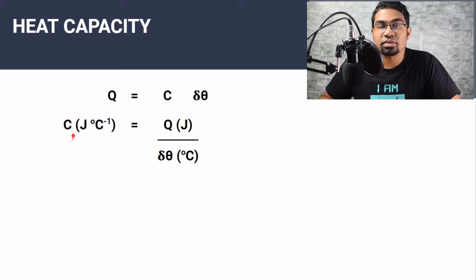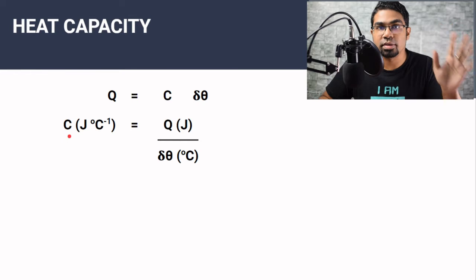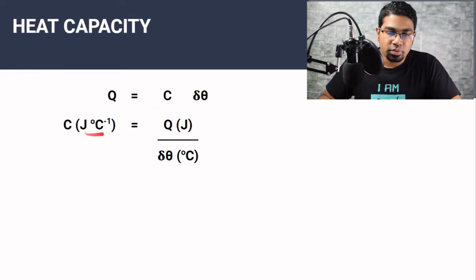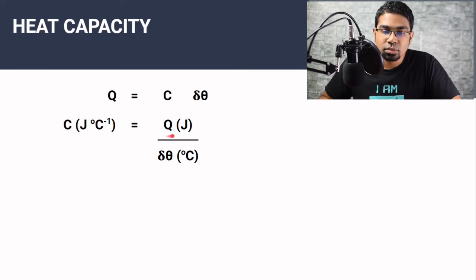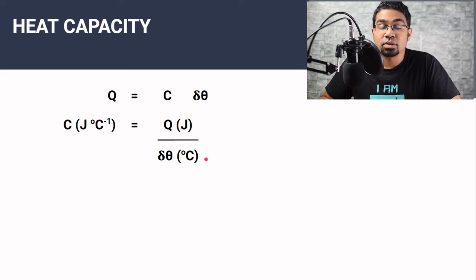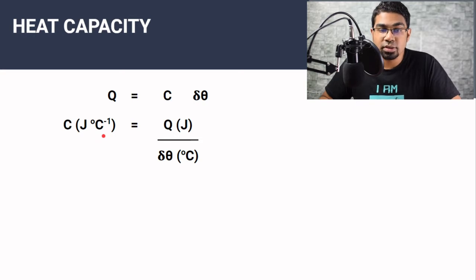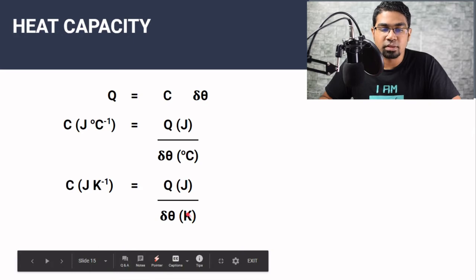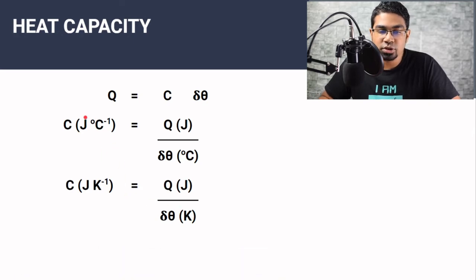The units for heat capacity — in physics, the units of a physical quantity are easy to determine if we know the formula. When we rearrange the formula, the unit for heat energy is joules and the unit for change in temperature is degrees Celsius. So the unit for heat capacity is joules per degree Celsius. We can also say joules per Kelvin. So there are two units for heat capacity: either joules per degree Celsius or joules per Kelvin.